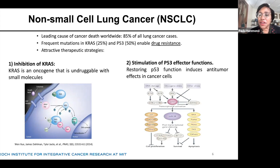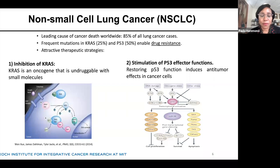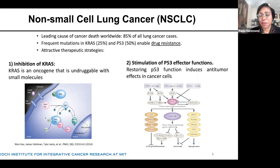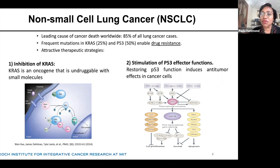P53 is a guardian gene that is often lost early on in tumor development in non-small cell lung cancer. Without P53, or with single point mutations, we lose the guardian role of P53, which monitors for DNA damage and enables apoptosis when DNA damage occurs. We'd like to restore that function, and we can do that with a microRNA, MIR34A.